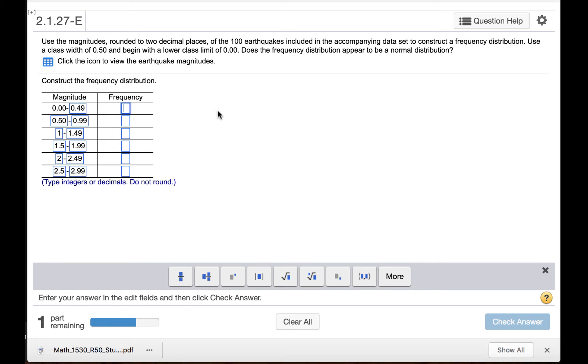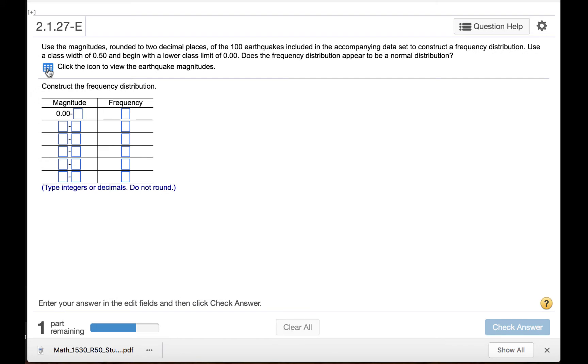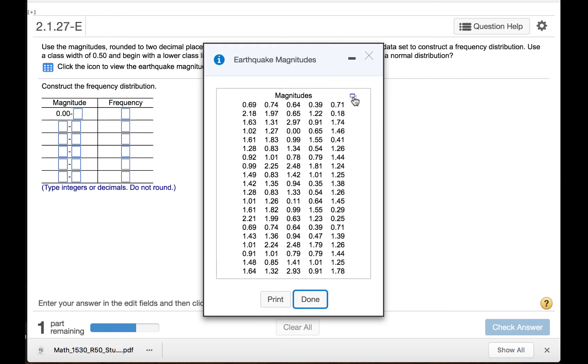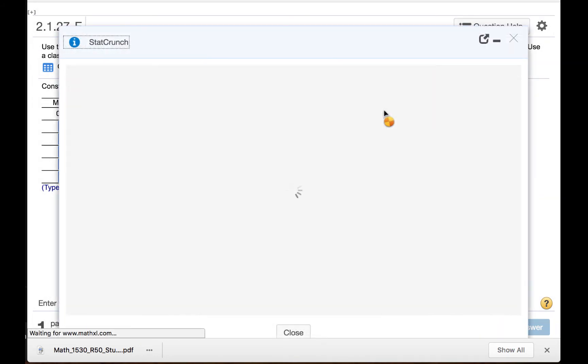Now we need to fill in the frequencies. We are going to click this icon to view the earthquake magnitude dataset. If we click this little rectangle here, we get an option to open the dataset in StatCrunch.